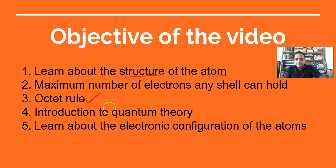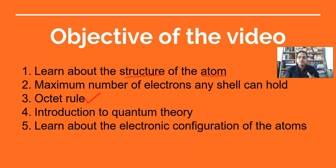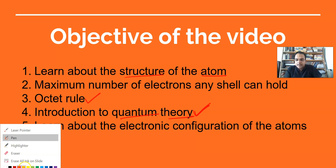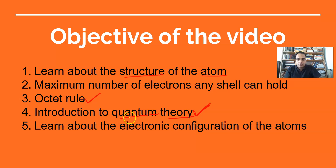Then we will talk about the octet rule, and then we will talk about how both of these rules fail. You might be wondering: why are we learning rules when they fail? Because once you understand these rules and once you understand that they are failing, then you will know that there is a need for a better theory — and that theory is called quantum theory. Quantum theory is a new thing which you are going to study in this chapter.